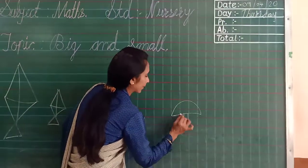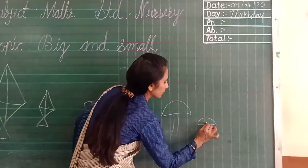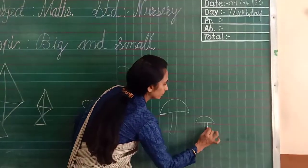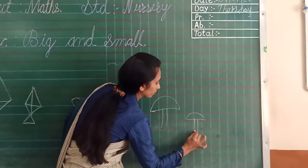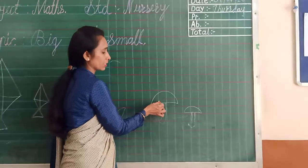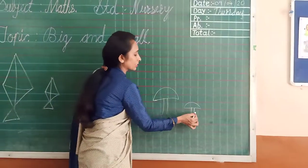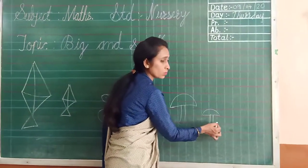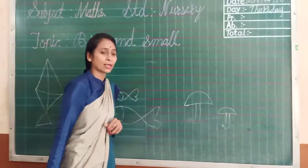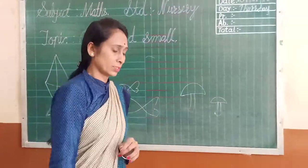In these two pictures, this picture is big. This is a big umbrella and this is a small umbrella. Very good.